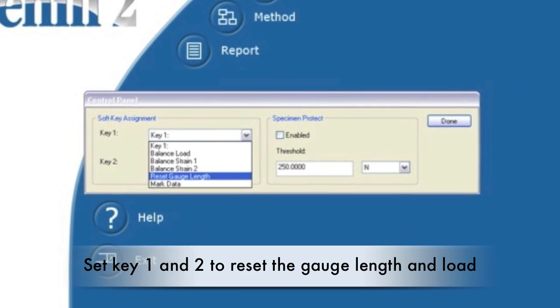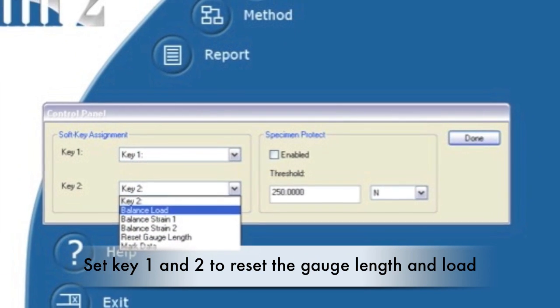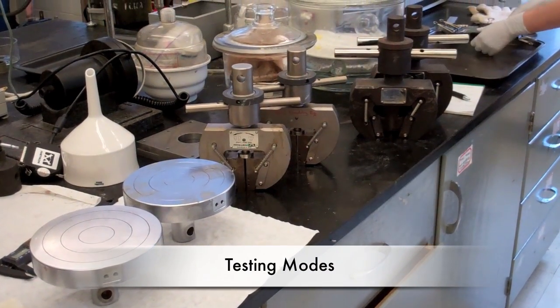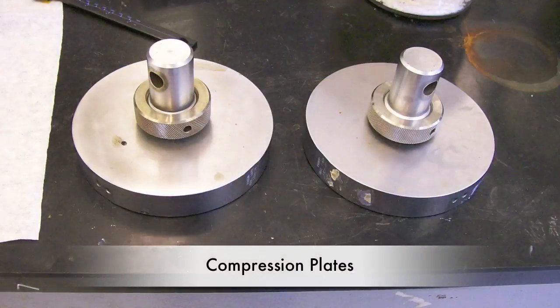Key 1 and key 2 can be assigned as reset gauge length and balance load respectively for ease of use. There are several types of testing modes. Compression plates use force to compact the sample.